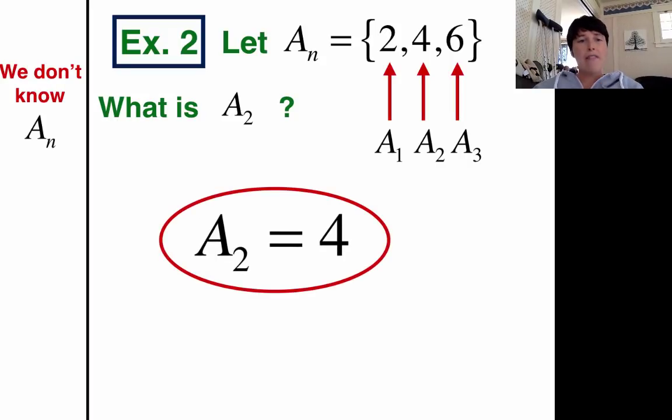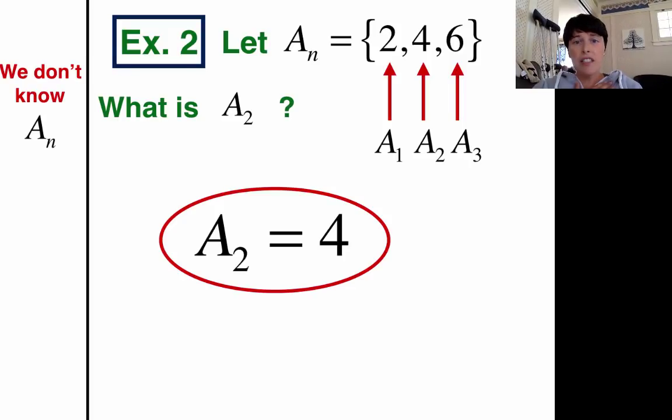So we don't have to have that equation. The equation might be nice if I asked you what a sub 100 is. Because you might not want to make your list sequence all the way out to the 100th term. That might be a lot of work. But you don't have to have it.